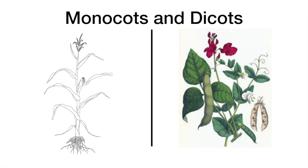Dicots have two cotyledons in their seeds, have a tap root system and have branching veins. This can be seen in maize or corn and peas.